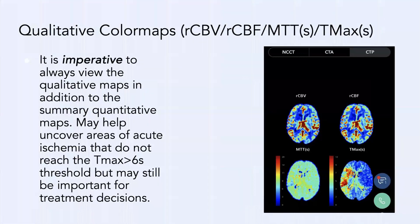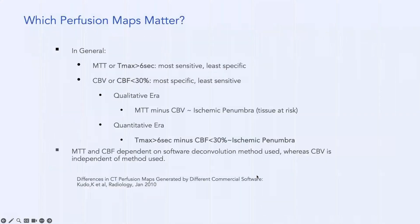It's imperative to view the qualitative maps, not just the quantitative maps with numbers. These may help uncover areas of acute ischemia that don't reach Tmax >6 seconds but may still be important for treatment decisions. Even without a number, you can see acute ischemia in a vascular territory. Tmax >6 seconds is most sensitive but least specific; CBF <30% is most specific but least sensitive.